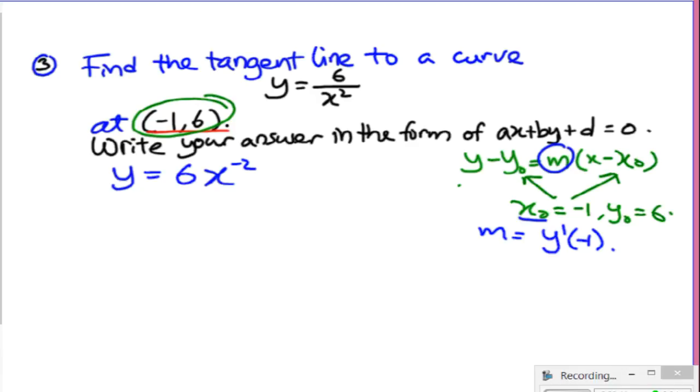Now the derivative is simply power comes down, then power is reduced by 1, negative 2 minus 1. So it's negative 12 x to the power of negative 3. That can also be written as negative 12 divided by x cubed.